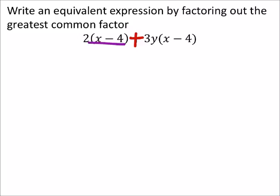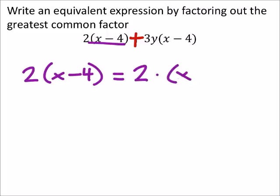I've got 2 times x minus 4. Now, if I use the same technique that we've been using, the two factors of this are 2 times x minus 4, right? Those are the two factors, because they're being multiplied together.